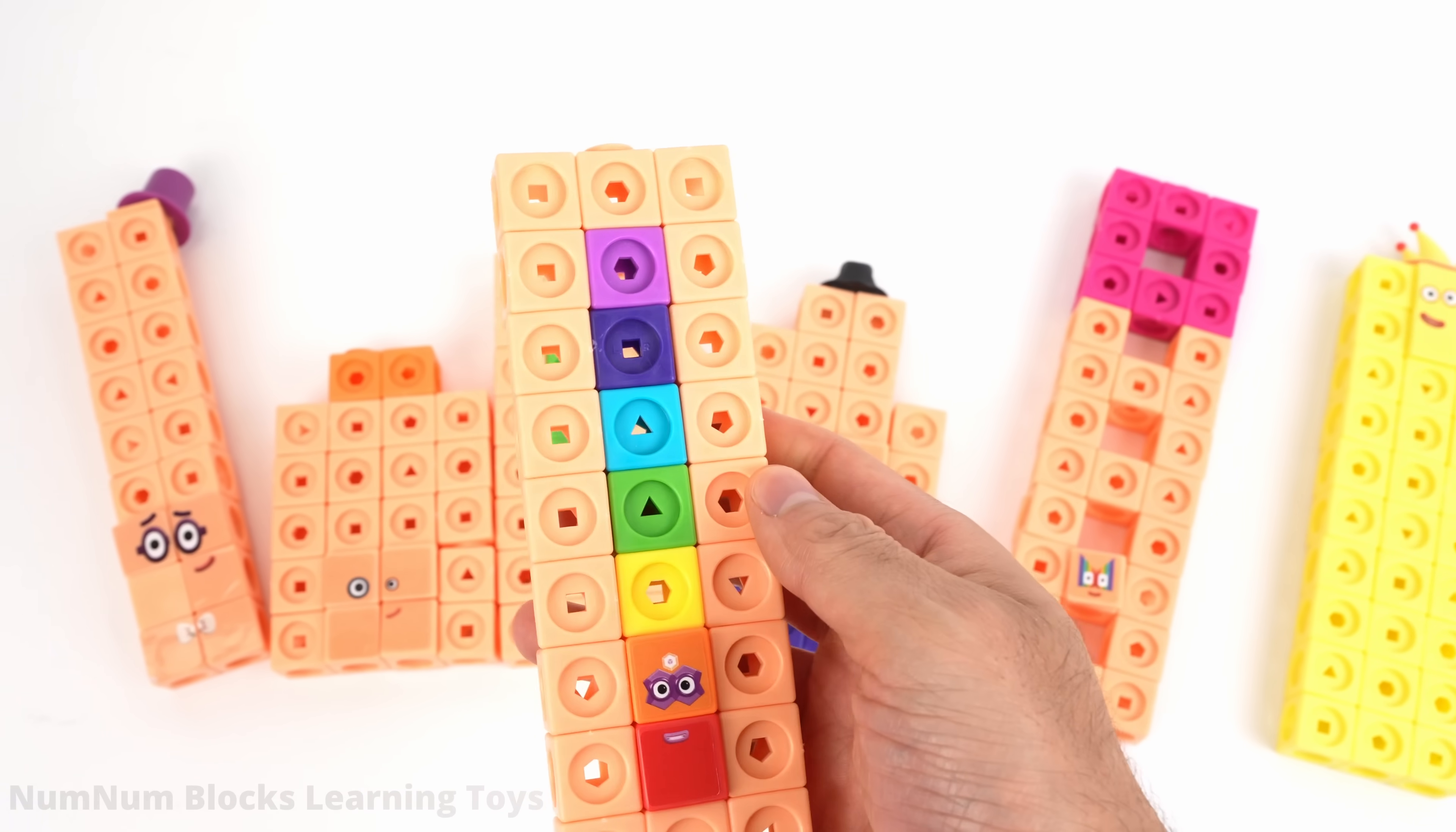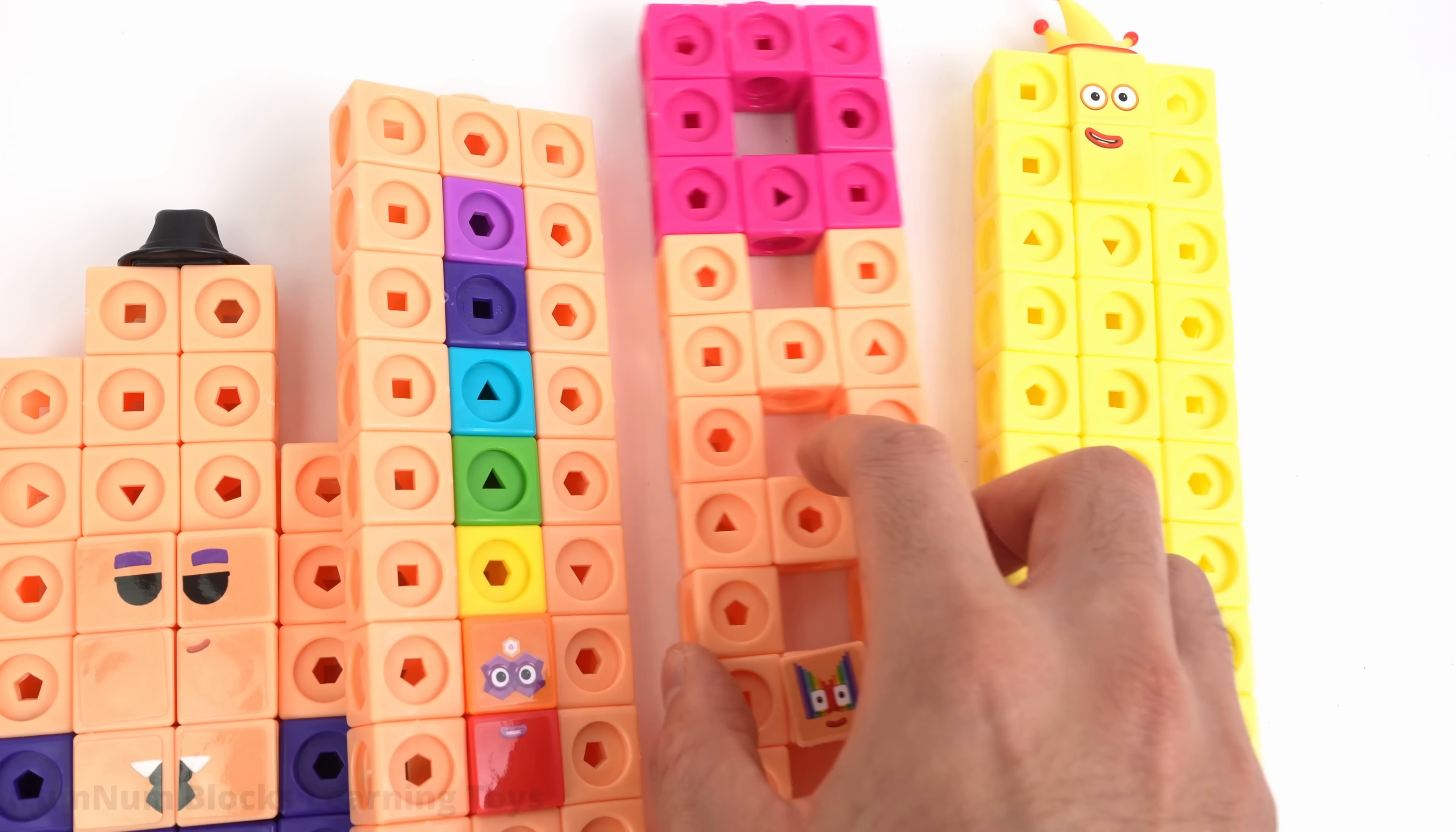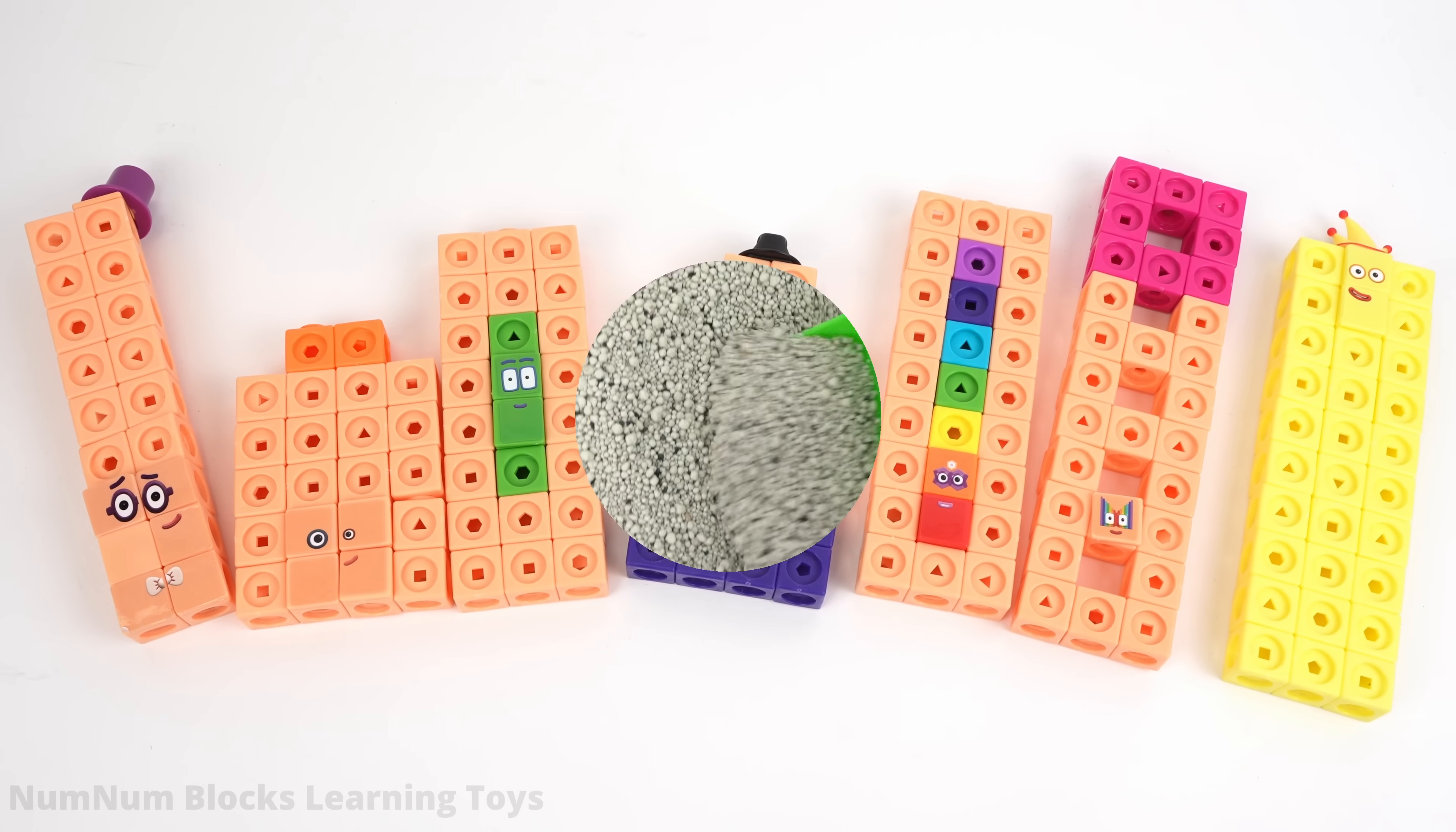Let's find the right spot for 27. What number comes before 27? 26. 27 goes in between 26 and 28. We found the first missing number. Let's go find the other numbers.